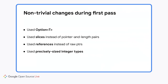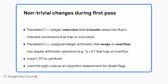In the first pass, I intended to do a literal translation, but I deviated from a purely mechanical translation in a few ways. In the Rust code, I used options where it made sense, slices instead of pointer and length pairs, and references instead of raw pointers. I used precisely sized integer types everywhere. I translated C++ integer coercions that truncate values into Rust checked conversions that trap on truncation, unless I recognized the code relied on truncation. I translated C++ unsigned integer arithmetic that wraps on overflow into regular arithmetic operators that trap on overflow in debug mode, unless I recognized the code relied on overflow. I also used FFI to call Brotli and used the R crate as an imperfect replacement for Apseo flags. Although I was careful, these refactorings still introduced a few bugs only found by end-to-end tests.